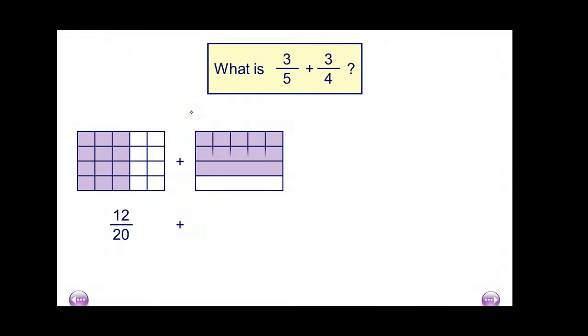So instead of having fifths and quarters, let's turn them into little chunks of 20, and then we can compare them. From 5 to 20 is four times bigger, so 3 is four times bigger to 12. Four to 20 is five times bigger, so 3 has got to get five times bigger, which makes 15/20ths.